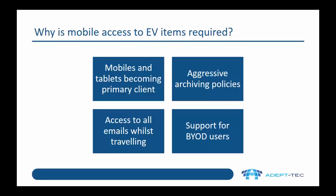Before we get into the technical details, let's consider why mobile access to EV archived items is required. One of the primary reasons is that mobiles and tablets are becoming the primary email client for many users. Aggressive archiving policies caused by quota-based archiving mean that younger and younger items are being archived in the user's email, so when they use their mobile client, they need access to the archived emails as well as their live emails.